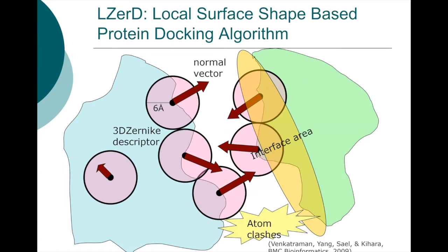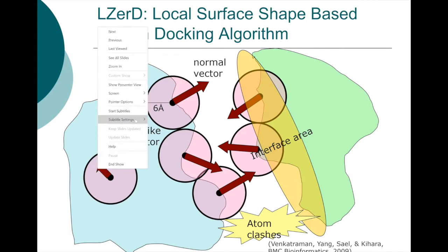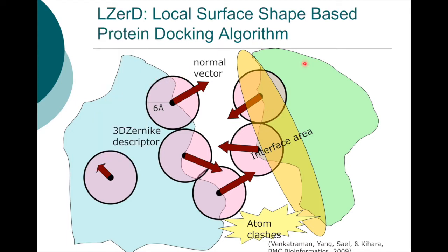In the first stage of generating lots of models, LIZARD considers a few geometrical features to select docking models. Given two protein structures, it considers four different geometrical features. The first is local surface shape.